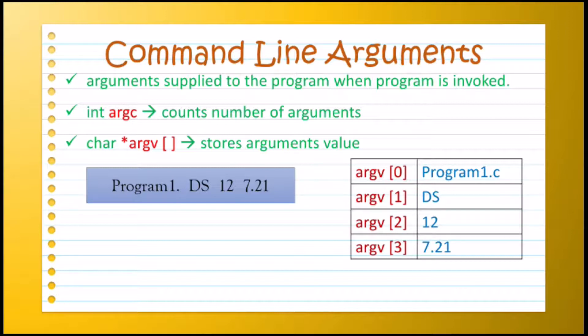Next argument, that is 7.21, will be saved in ARGV[3]. So we have passed 4 arguments here by using command line.